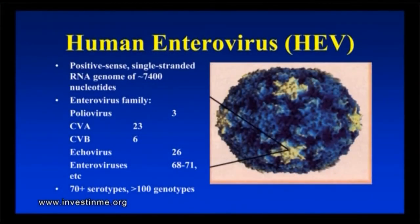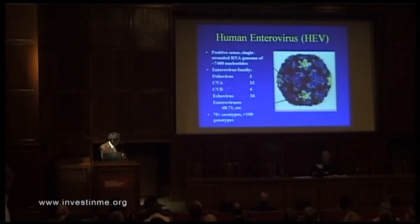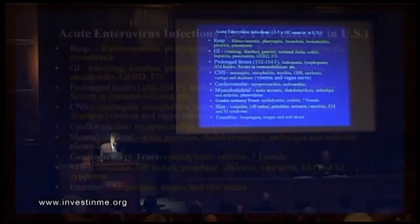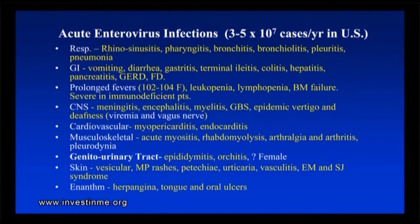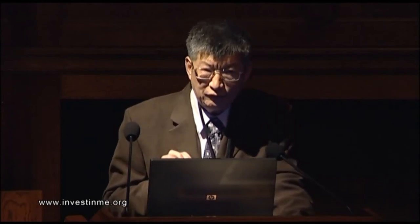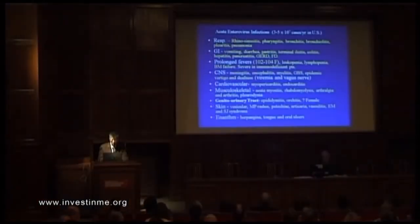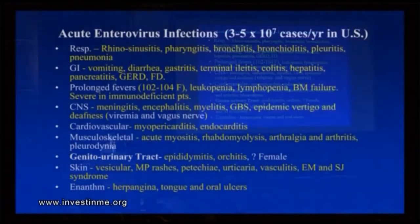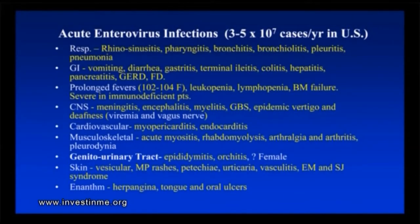Human enteroviruses consist of more than 70 serotypes, and there are more than 100 genotypes if you look at gene sequence. There are three famous polioviruses, 23 Coxsackie A, six Coxsackie B, 26 echoviruses, and now the newer enteroviruses are given a number. Acute enterovirus infection — you've probably seen this before — but just to make some comments on these infection symptoms: there are about 30 to 50 million cases that occur in the United States, based on a study from more than 10 to 15 years ago by the Centers for Disease Control. These cases tend to occur in epidemics. There are relatively few virus infections that occur in epidemics.